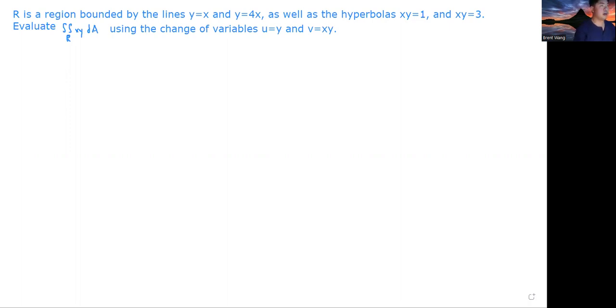So here is the sample problem. Let R be a region bounded by the lines, and I'm going to draw this as I'm talking. Y equals X, Y equals 4X, along with the hyperbolas XY is 1 and XY is 3. So then we would be doing something like this. This is Y equals X, that's Y is 4X, XY is 1, and XY is 3. This would be very, very difficult to integrate. It's damn near impossible. And we're going to evaluate this R, XY, DA.